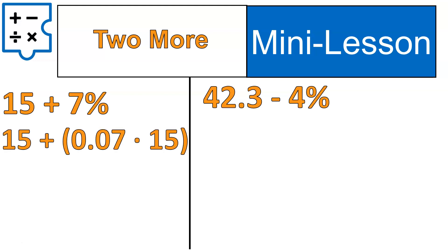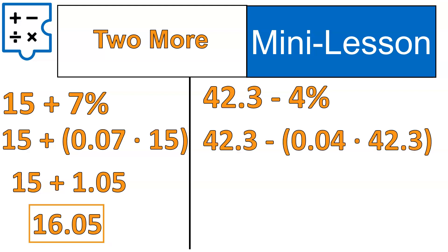We've got 15 plus 7% of 15. In other words, 15 plus 1.05. And that gives us 16.05. We'll have 42.3 minus 4% of 42.3. Figure out the percentage. We get 42.3 minus 1.692. And we'll simplify that down to 40.61. Again, I'm rounding the decimal. So, there we go.